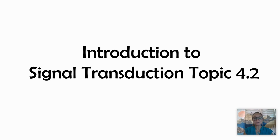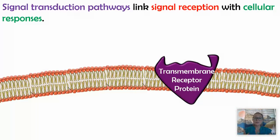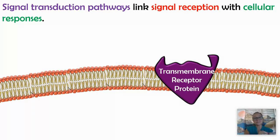In this video, I'm going to introduce signal transduction pathways, and I'll use the examples of G-protein linked receptors, receptor tyrosine kinases, and ligand-gated ion channels. When we talk about signal transduction pathways, the big picture topic is cell communication. When one cell communicates with another cell, whether it's nearby or far away, they use chemical messages or chemical signals, also known as ligands.